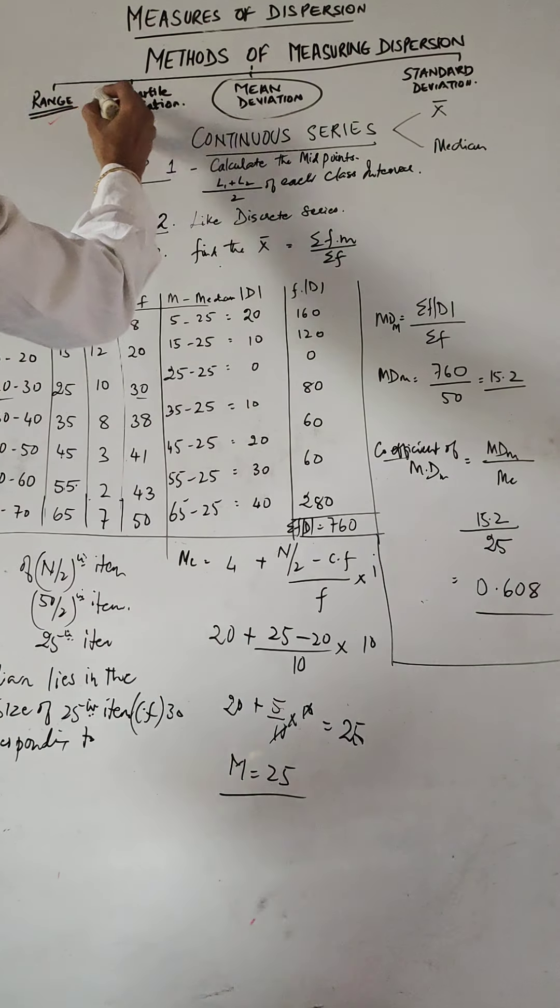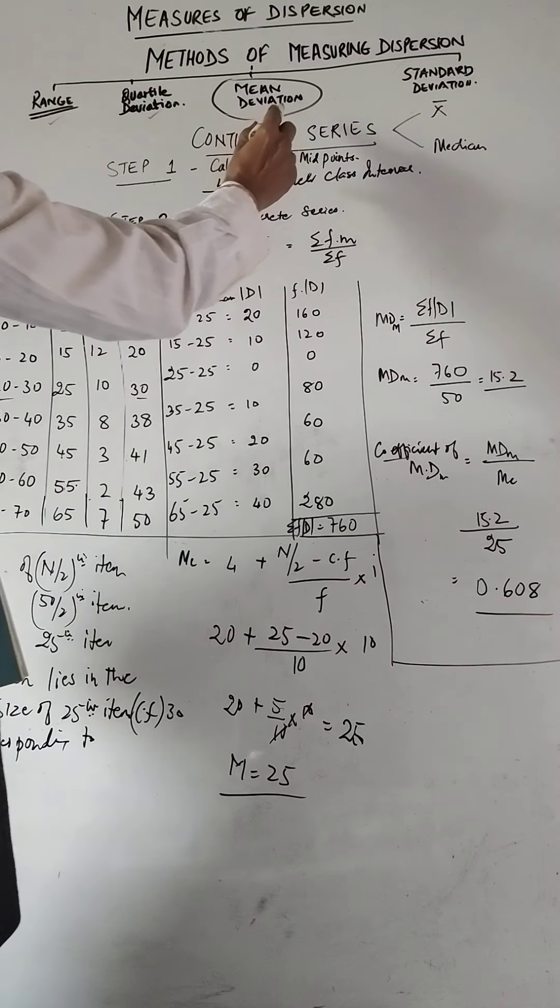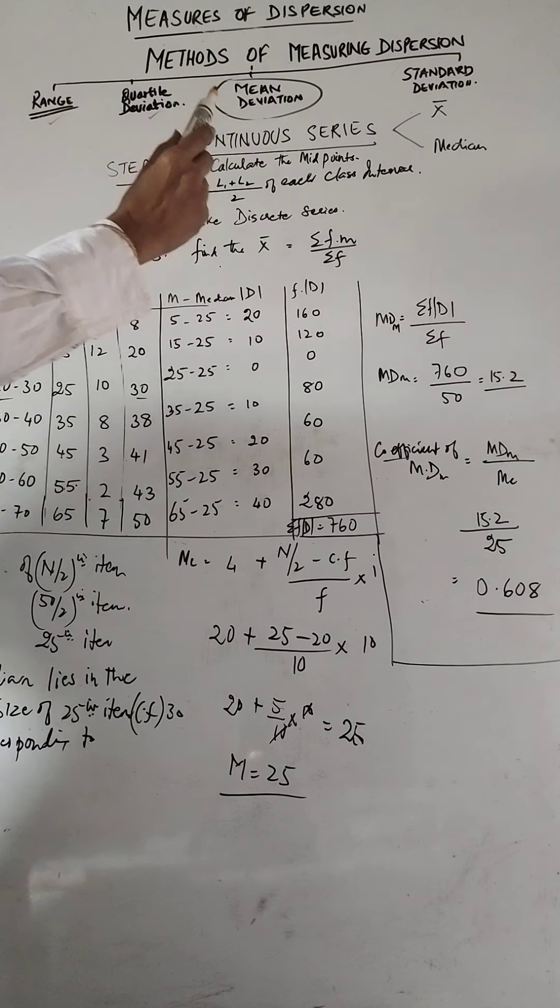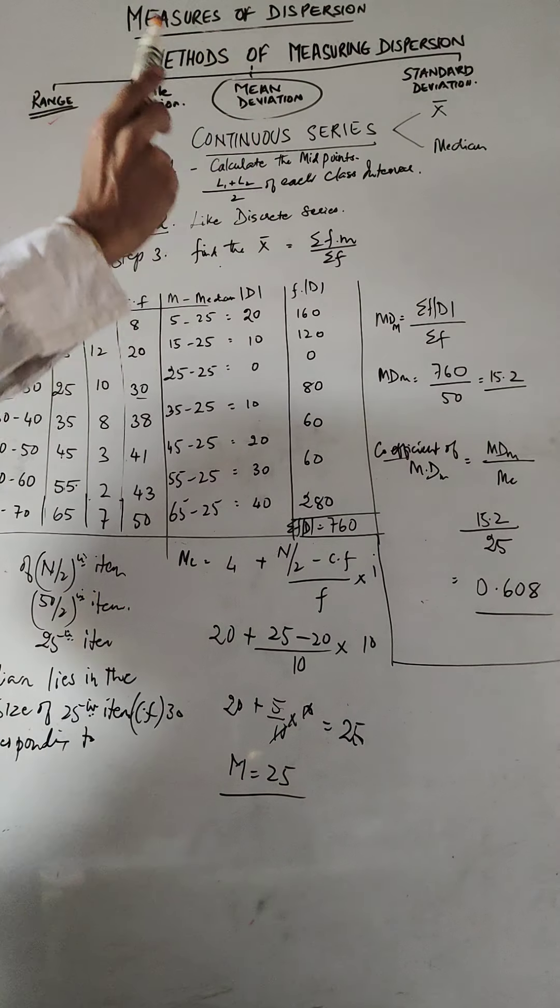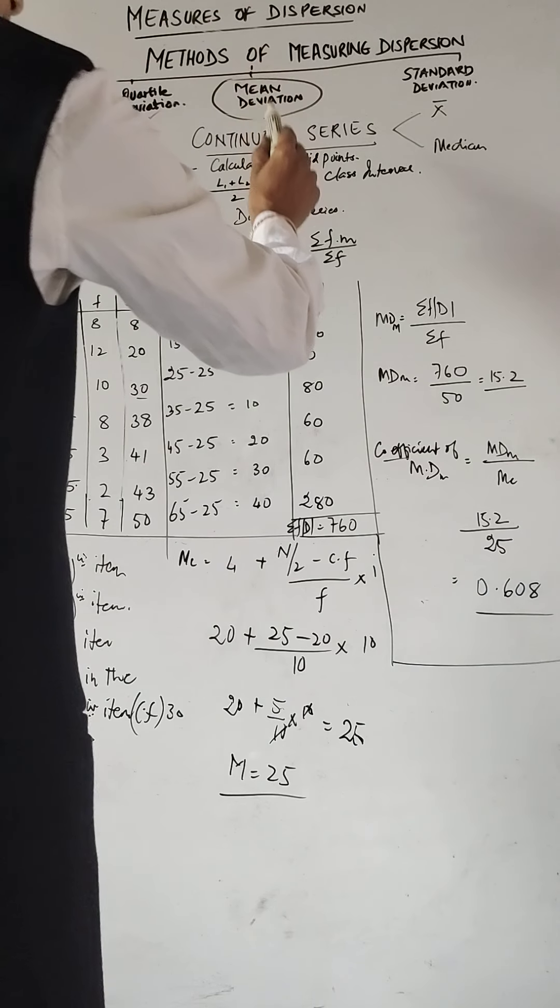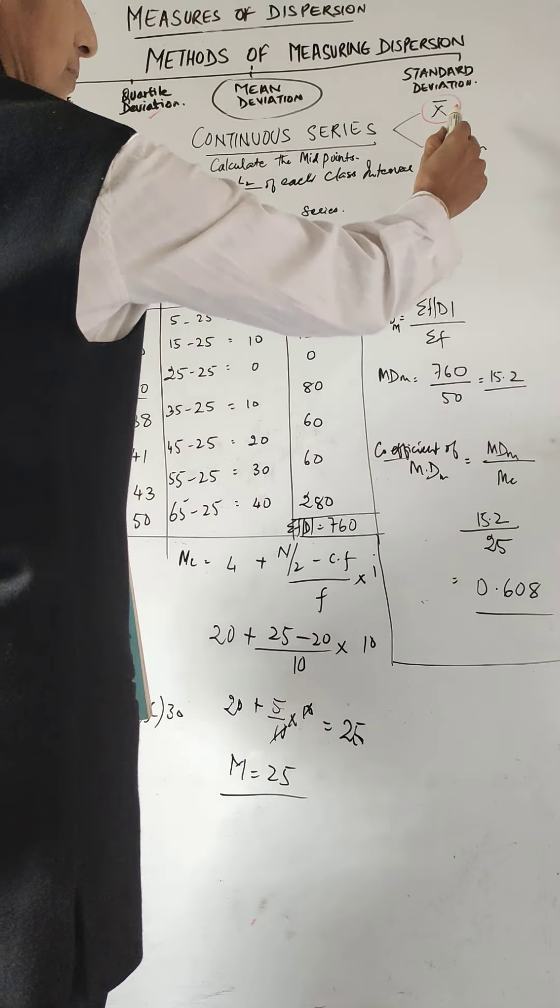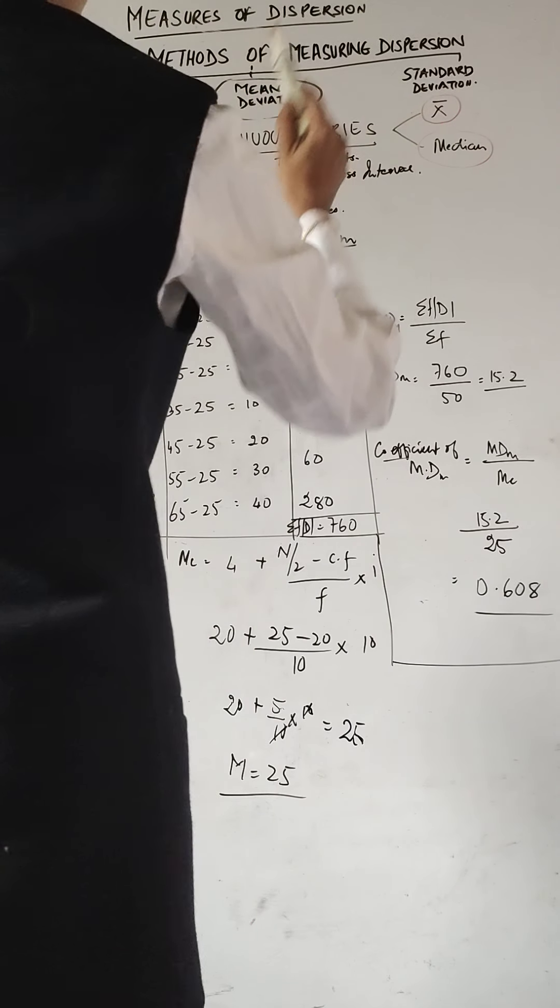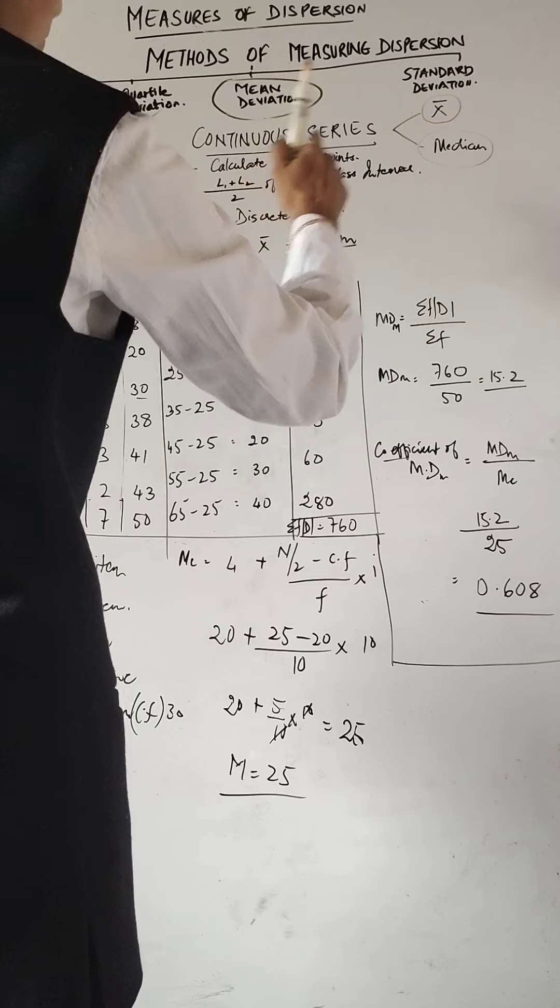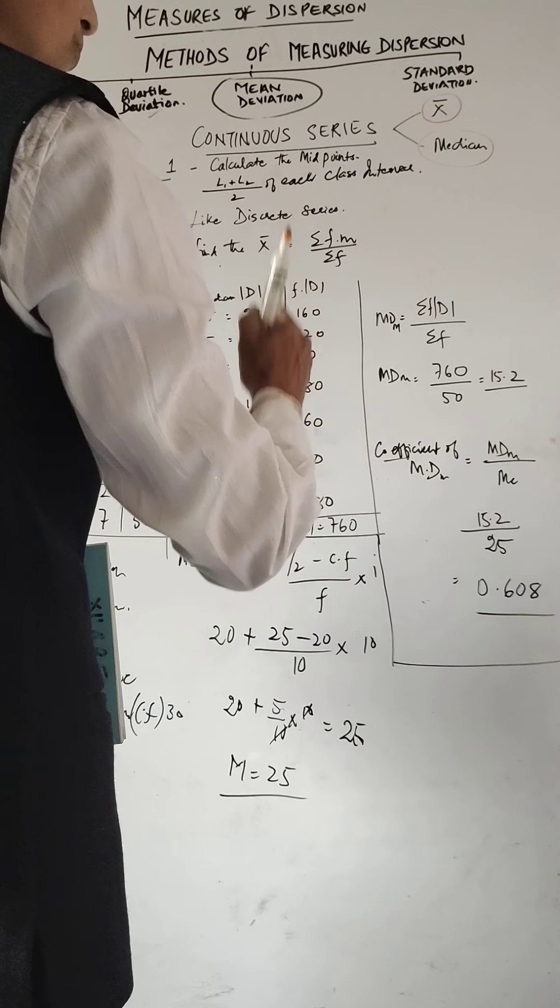Here we have methods of measuring dispersion. We finish with range, we finish with total deviation. We are doing mean deviation and mean deviation also we finish with the two series, that is the individual and the discrete. In this we are doing the continuous series. In the continuous series we first can either work out the average with the mean or with median. We finish with mean. In the previous class we worked out the mean deviation from the mean.